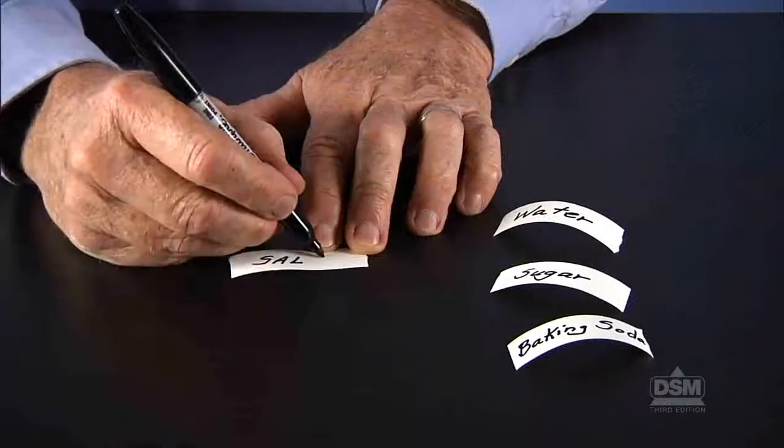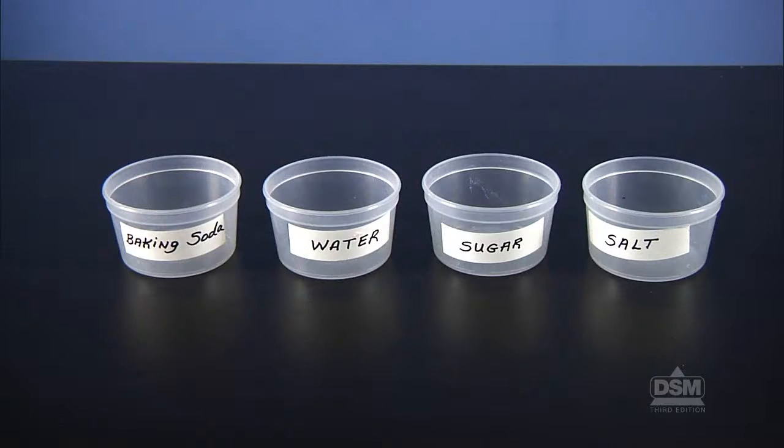Write water, salt, sugar, and baking soda on four labels for each team of two, and affix one label to each of the plastic cups.